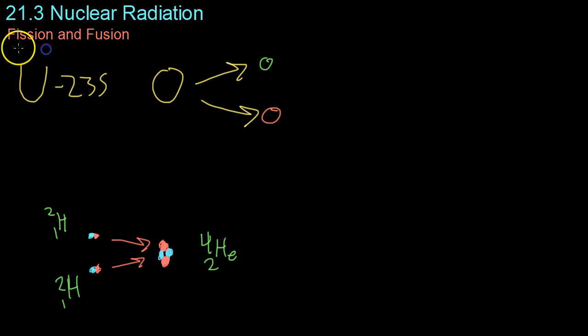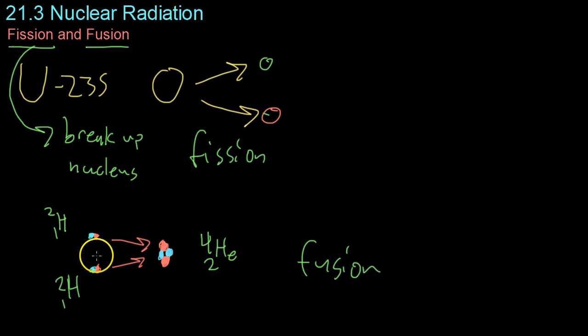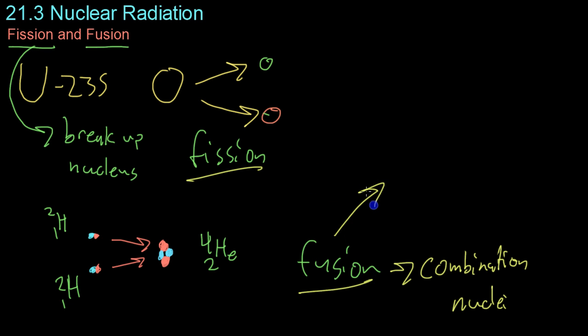Moving on now, we're going to be discussing fission and fusion. Now, fission is essentially the breakup of a nucleus into smaller parts. So, fission would be the example right here, where you have U-235 breaking up into two smaller atoms. Oppositely, fusion is what we have going on down here, where you have two deuterium nuclei combining to form a helium nuclei. So, fusion is the combination of smaller nuclei to form larger ones. And, both fission and fusion release immense energy. Fusion more so than fission.